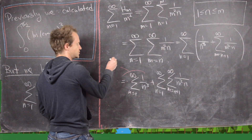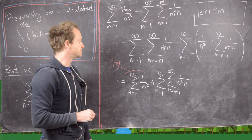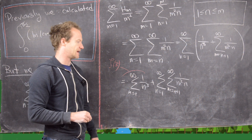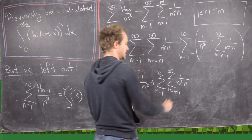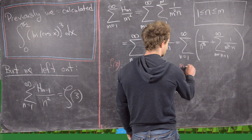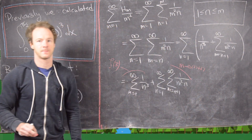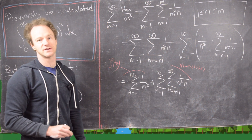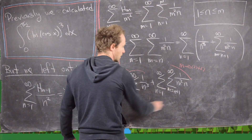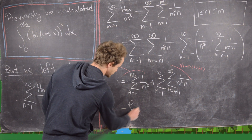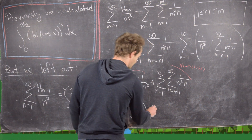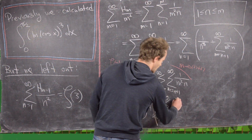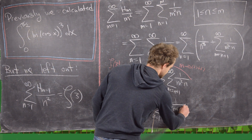That first term is just ζ(3). Now re-index the double sum by replacing m with m+n, so the bounds shift from m=n+1 to infinity to m=1 to infinity. That gives us the sum of H_m/m² equals ζ(3) plus the double sum n=1 to infinity, m=1 to infinity, of 1/((m+n)²·n).